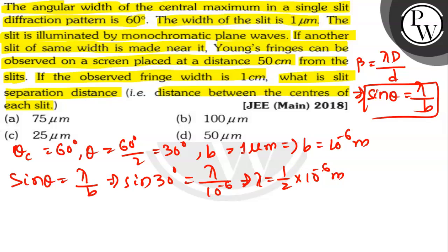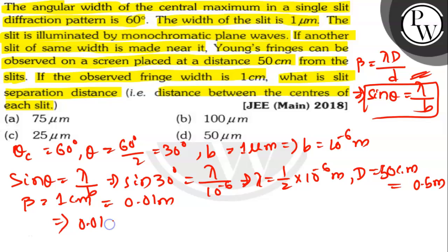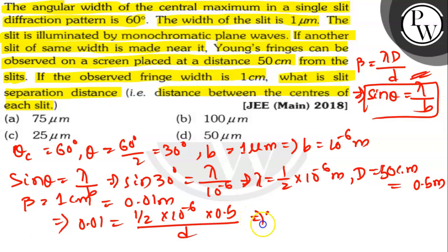The distance of the screen from the slits D is 50 centimeters, which is 0.5 meters. The fringe width β is 1 centimeter, which is 0.01 meters. Using the relation β = λD/d, where d is the slit separation, we get: 0.01 = (0.5 × 10⁻⁶ × 0.5) / d. Solving, d equals 25 × 10⁻⁶ meters, which is 25 micrometers.